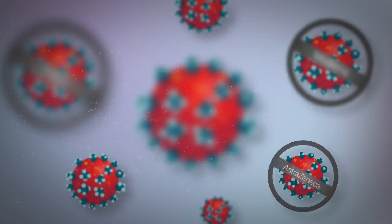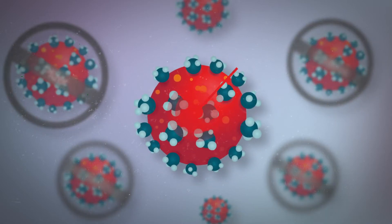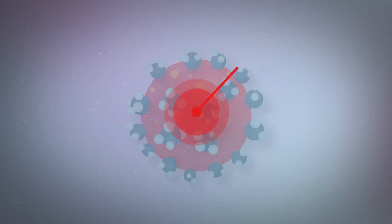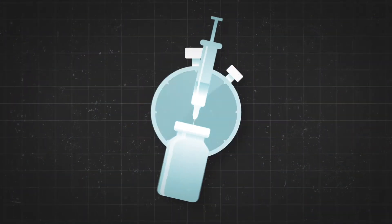Pfizer, Moderna, AstraZeneca, Johnson & Johnson, and others. The vaccines for SARS-CoV-2 are being administered to people across the world. But how did we get to a vaccine so quickly?